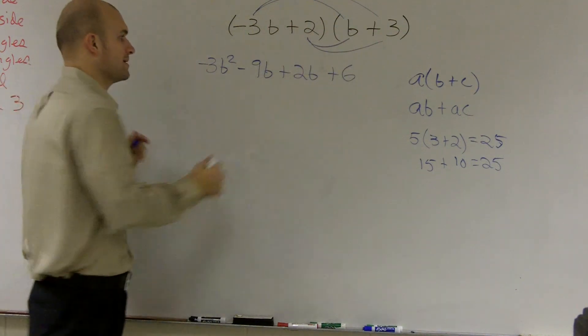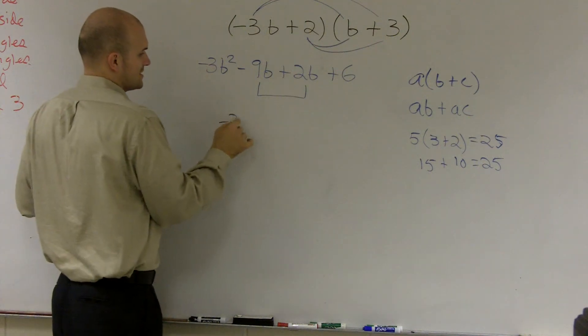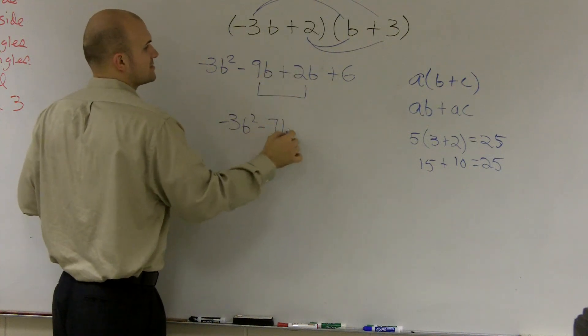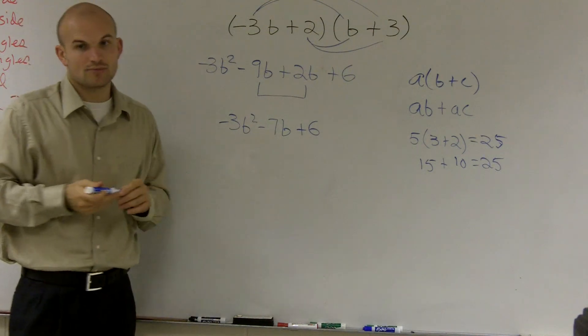Then what I can do is combine my like terms, which is my middle two terms, and what I obtain is negative 3b squared. Negative 9b plus 2b is negative 7b plus 6. And that is how you multiply 2 binomials.